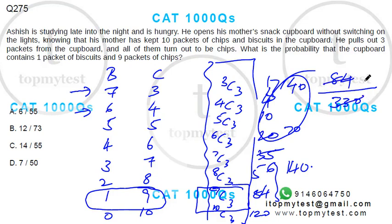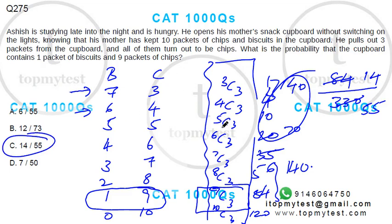Dividing by 6, we get 14 and 55. So the answer is 14 out of 55, and option C is our correct choice. You can solve it using sampling, which is basically another way of solving using conditional probability. That finishes this one.